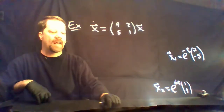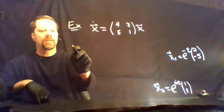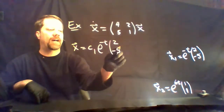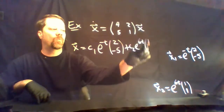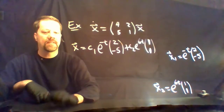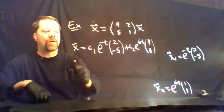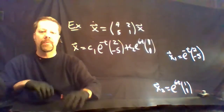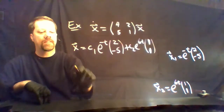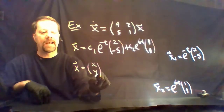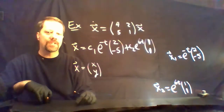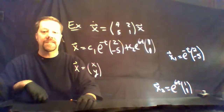We now have these two functions as solutions to the linear system. It follows from the lemma that c1·e to the negative t times (2, -5) plus c2·e to the 6t times (1, 1) is also a solution for any constants c1 and c2. So far in the development of our theory, we don't know that all solutions are in this list — they will be, but we need to prove that. Note that we have two constants of integration since the vector x has two coordinates, and we expect the solution set to have two arbitrary parameters, which it does.